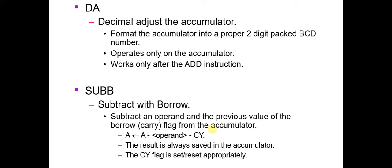So now let's start with DA. DA means decimal adjust the accumulator. What it will do? It will format the accumulator into a proper 2 digit packed BCD number. That means it will convert the number into proper decimal number. We will see more about this in the example.